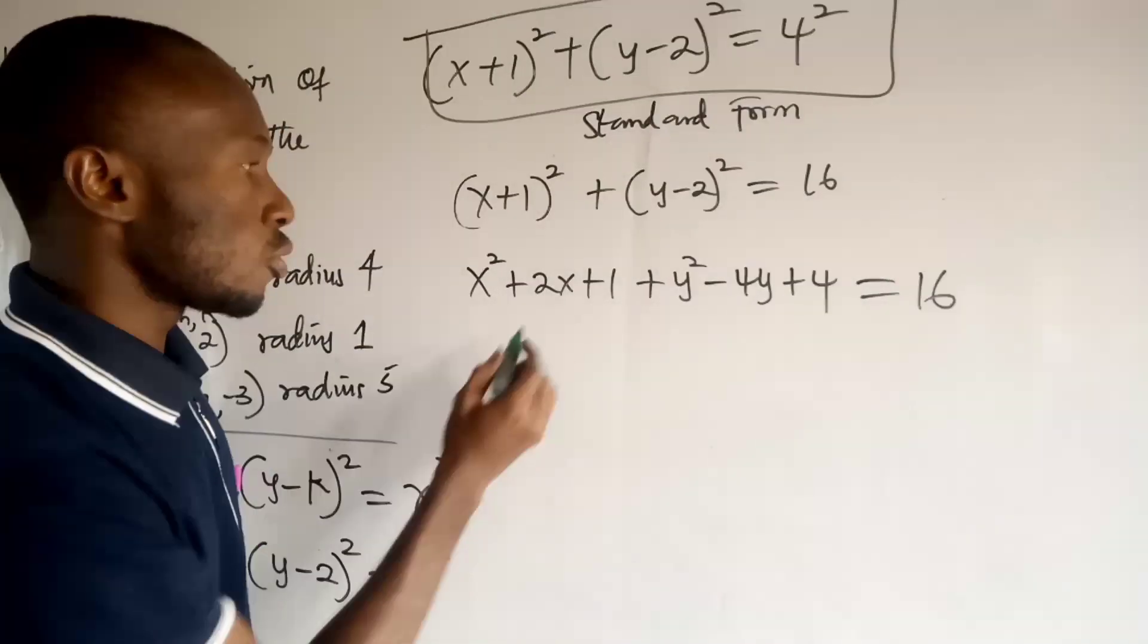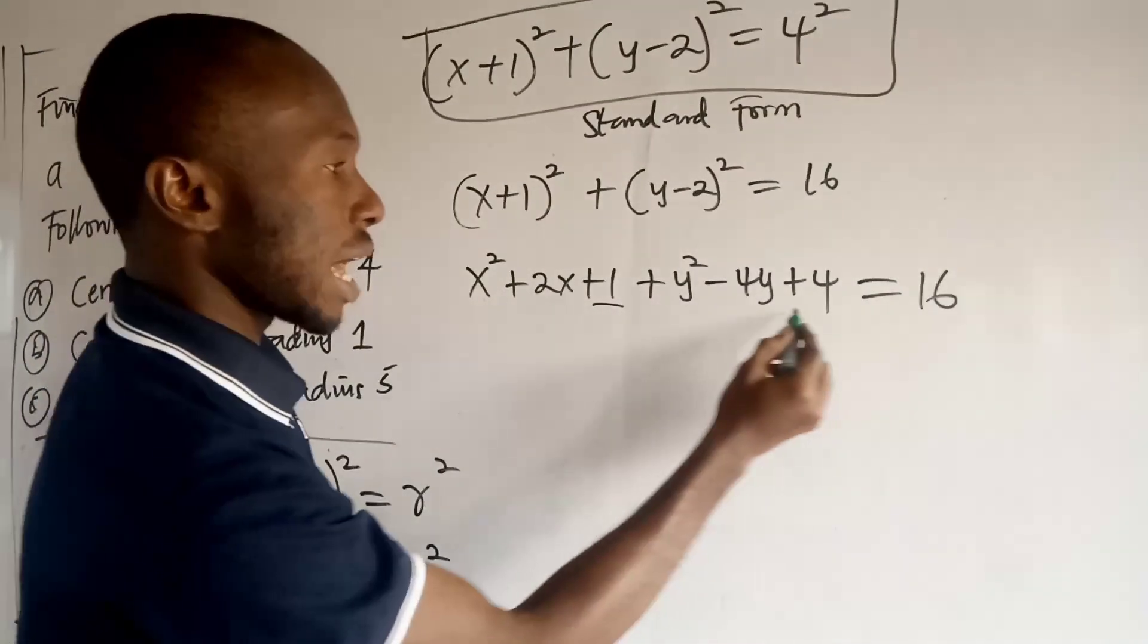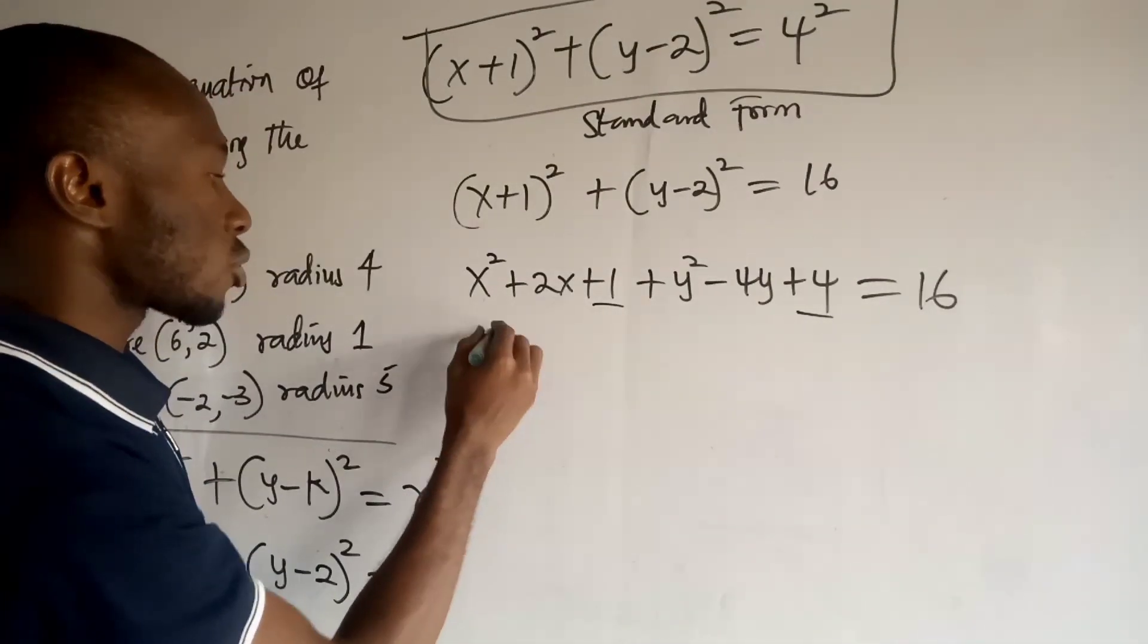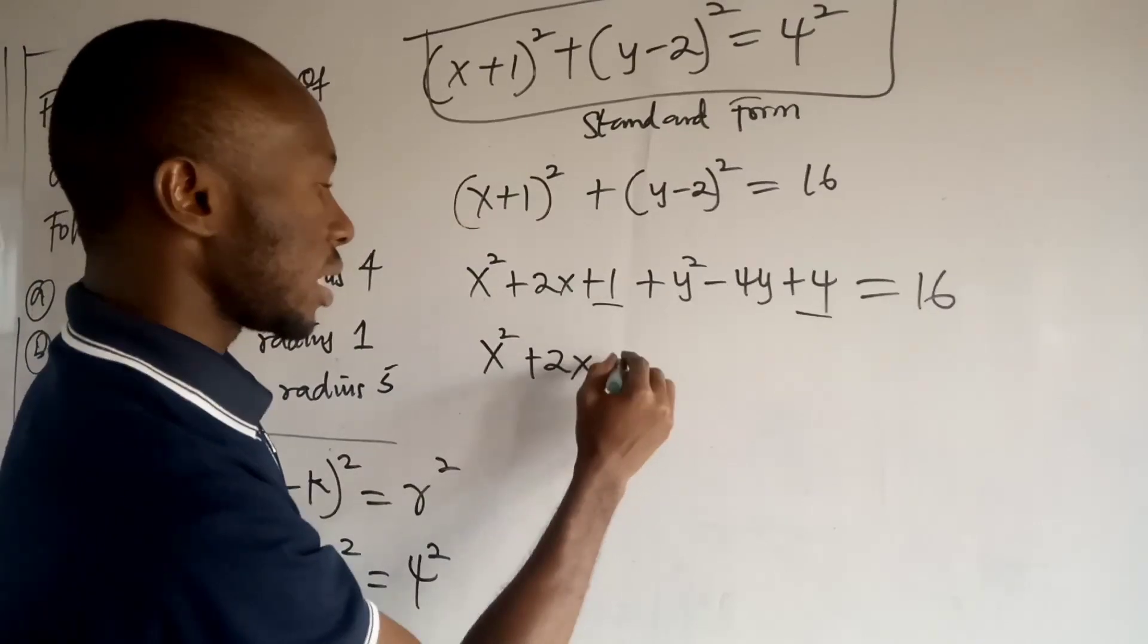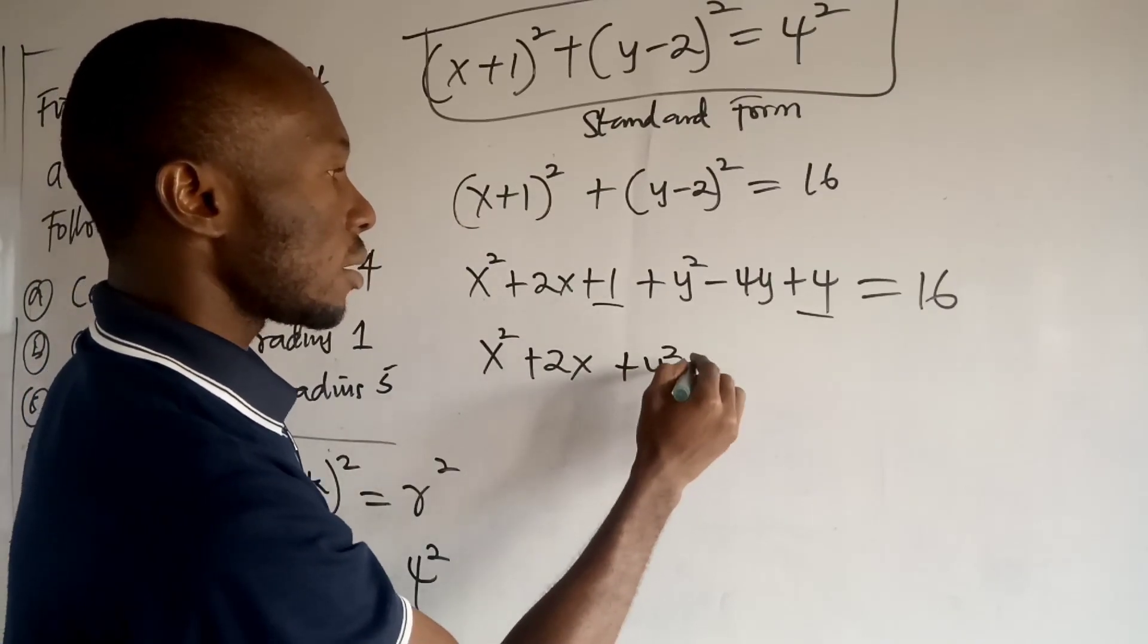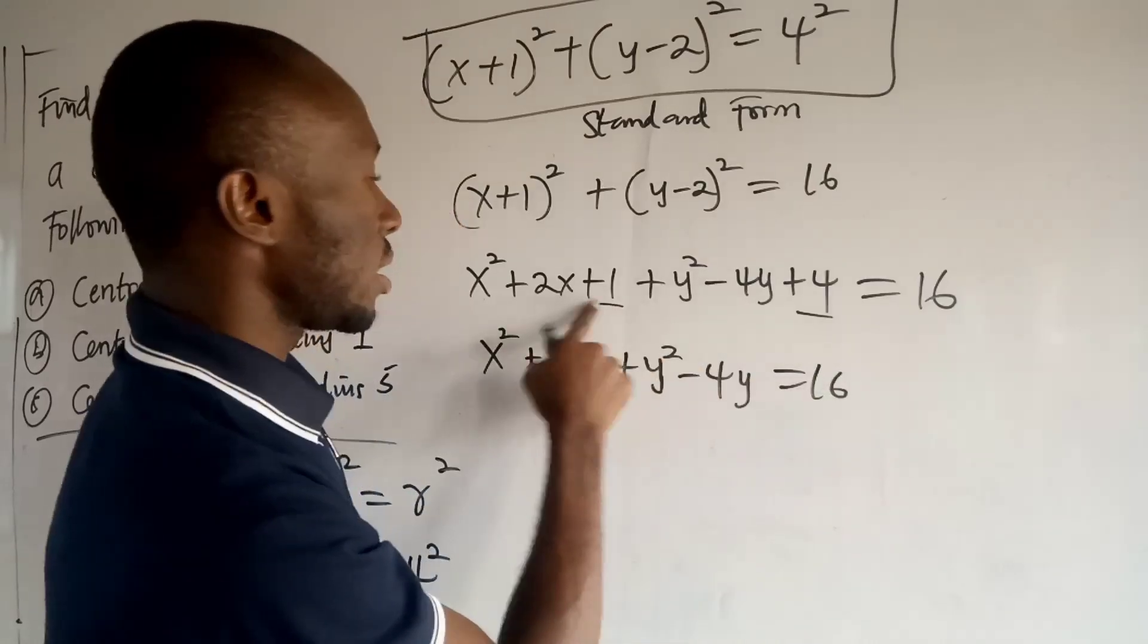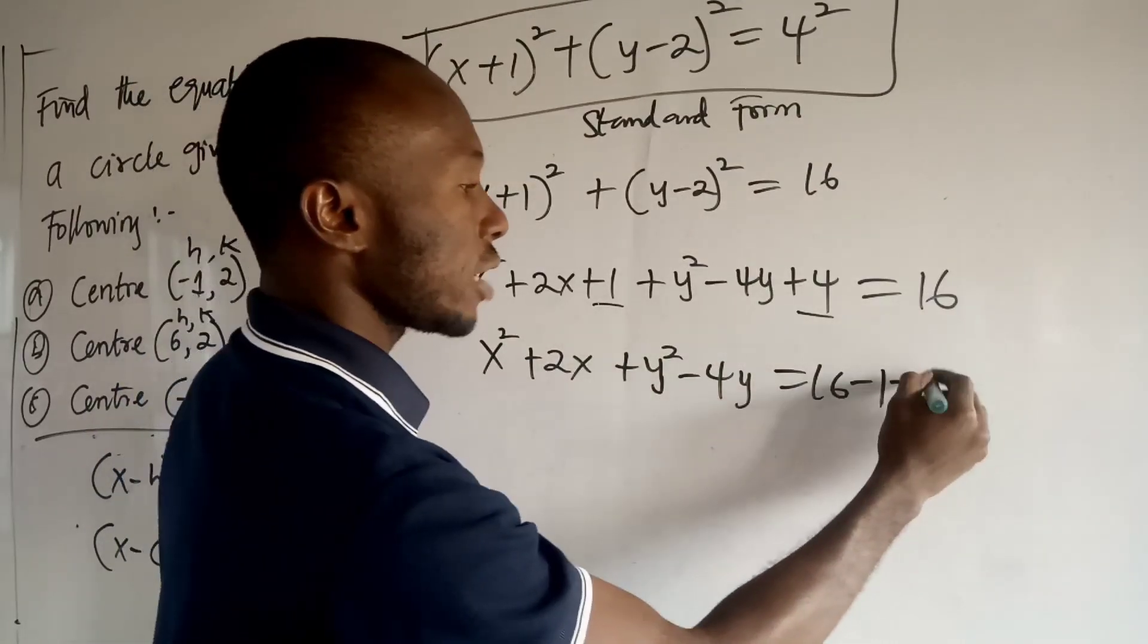Now, the next thing you want to do is to take all these guys, this constant term, to the other side of the equation. So you have x squared plus 2x, then plus y squared minus 4y,